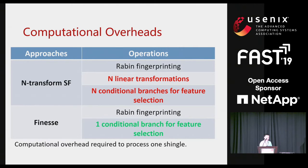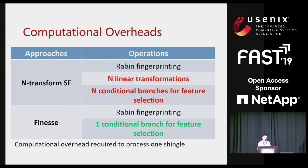Now we analyze the computation overheads of these resemblance detection approaches. This table shows the computation overheads for both approaches to process one rolling hashing window. After computing rolling fingerprints, the n-transform super feature also requires linear transformations to permute fingerprints and conditional branches for feature selection. While PHILESS only requires one conditional branch. Obviously, PHILESS requires much fewer operations than n-transform super feature to process one window, since it eliminates the linear transformation operations.